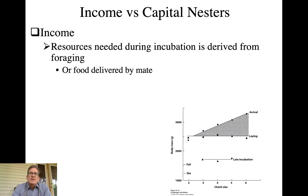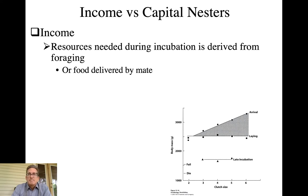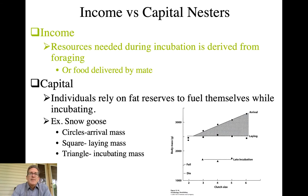Two more terms associated with laying patterns in birds are income versus capital nesters — or income versus capital layers. Income nesters derive the nutrients and minerals they need for production of eggs and then also for incubation by foraging. They are reliant on taking breaks from incubation to replenish their stores, or if stuck incubating, their mate delivers food to them. This is another important reason why many birds are monogamous.